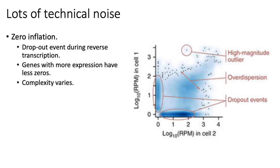For example, for data that comes out of DropSeq experiments or 10x Chromium experiments, sometimes up to about 95% of your table are zeros. So this is really striking. If you were to take two replicate cells and sequence them using DropSeq, and plot the expression level or the abundance of each gene across the two replicates, you basically get a plot similar to the one you see here on the right.